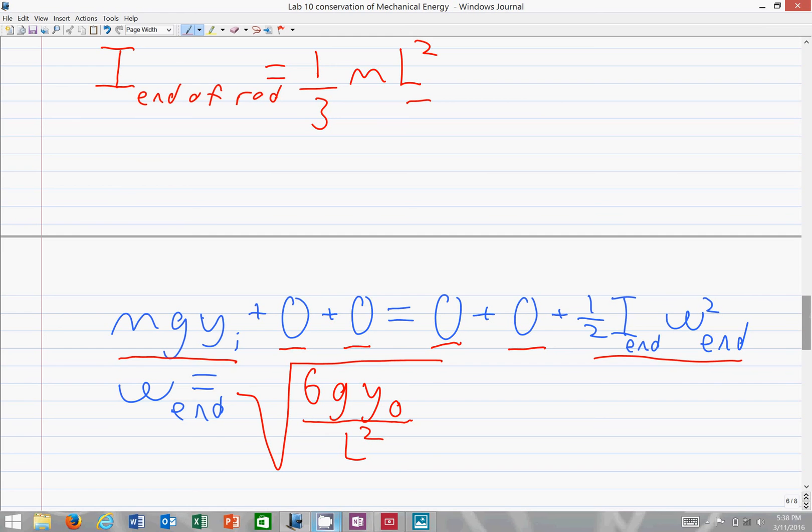So once again, we have a square root, the constant, gravity, the initial height.